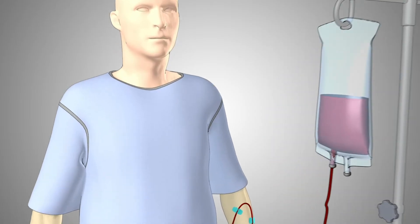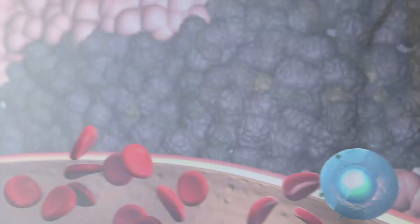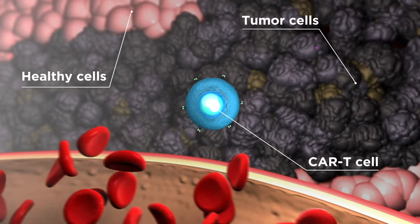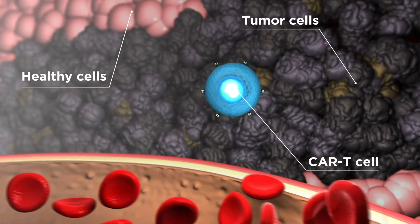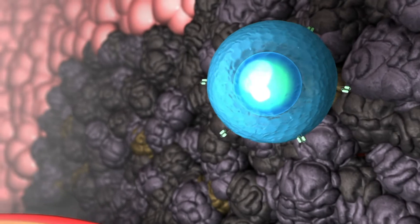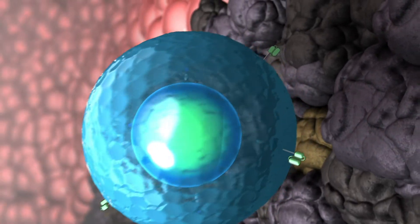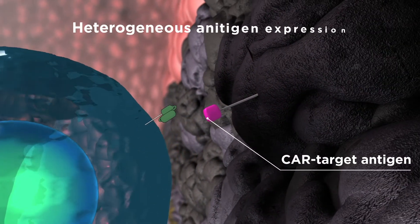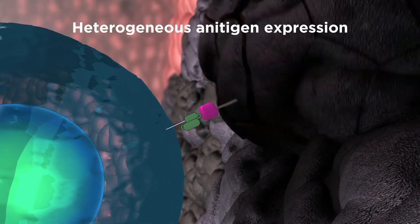Within a tumour, cells display different antigens, creating a heterogeneous environment. CAR T cells only kill tumour cells expressing the antigen they recognise.